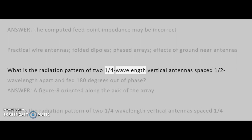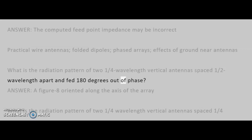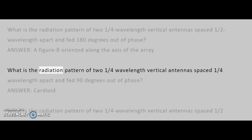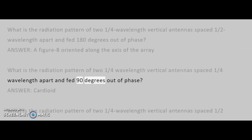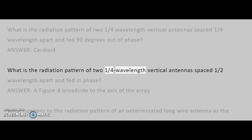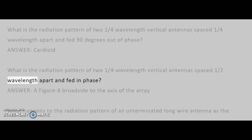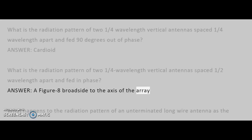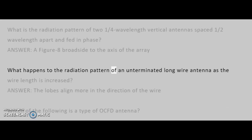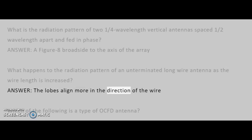What is the radiation pattern of two one-fourth-wavelength vertical antennas spaced one-half wavelength apart and fed 180 degrees out of phase? Answer: a figure 8 oriented along the axis of the array. What is the radiation pattern of two one-fourth-wavelength vertical antennas spaced one-fourth wavelength apart and fed 90 degrees out of phase? Answer: cardioid. What is the radiation pattern of two one-fourth-wavelength vertical antennas spaced one-half wavelength apart and fed in phase? Answer: a figure 8 broadside to the axis of the array. What happens to the radiation pattern of an unterminated long wire antenna as the wire length is increased? Answer: the lobes align more in the direction of the wire.